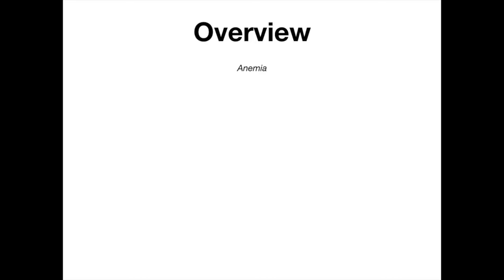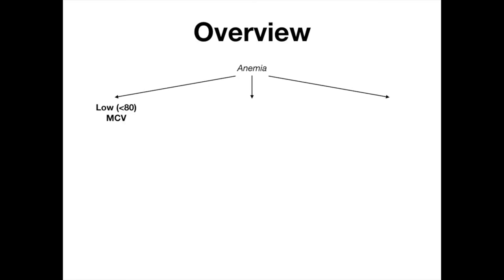Anemia is classified according to the MCV — the mean corpuscular volume. When the mean corpuscular volume is below 80, it's considered low. Let's start by talking about the diseases we'll go through; this is our overview slide.